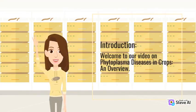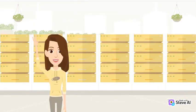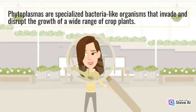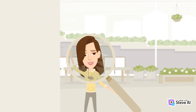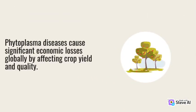Introduction. Welcome to our video on Phytoplasma Diseases in Crops – An Overview. Phytoplasmas are specialized bacteria-like organisms that invade and disrupt the growth of a wide range of crop plants. Phytoplasma diseases cause significant economic losses globally by affecting crop yield and quality.